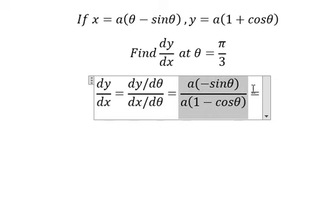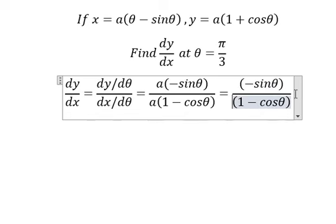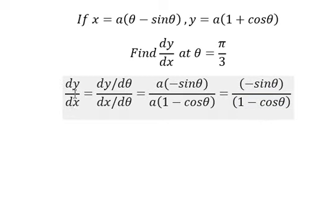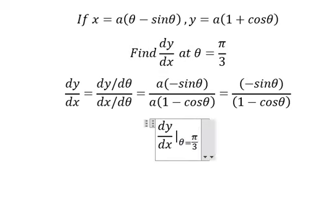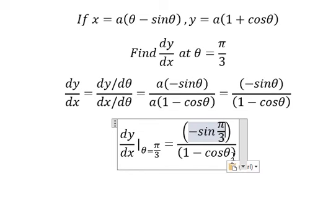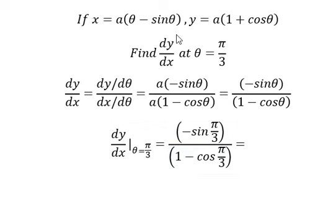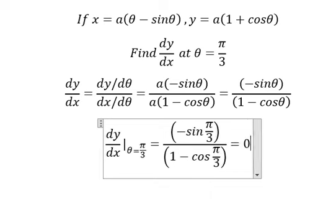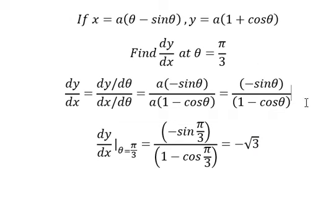So I need to simplify - the a's cancel out. We calculate this one, and we get negative square root of 3. This is the end, thank you for watching.